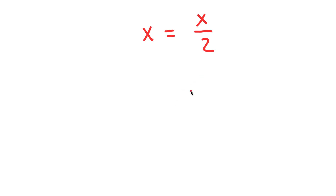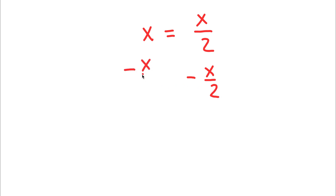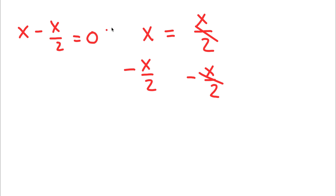In this problem, I have x is equal to x over 2. To solve this problem, I'm going to first start by subtracting x over 2 on both sides. These two cancel out, and I'll be left with x minus x over 2 is equal to 0.